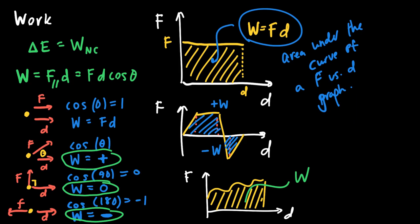For most problems we've done so far, constant forces act on an object and we use free body diagrams to find how much work was done. But especially for cases where forces are changing, it's useful to use a force versus position graph to find the work done on an object — even estimating the shapes under a strangely changing force curve to approximate the total work.